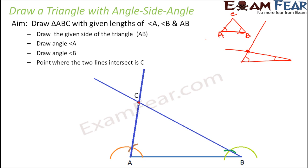The next important point is when you are drawing a triangle with angle side angle criteria, make sure that when you draw the angles, the length of the sides are sufficiently long so that you can actually see them intersect at a point.